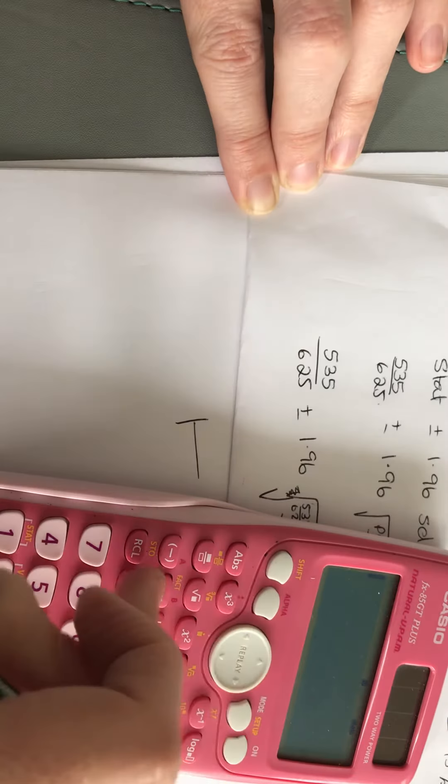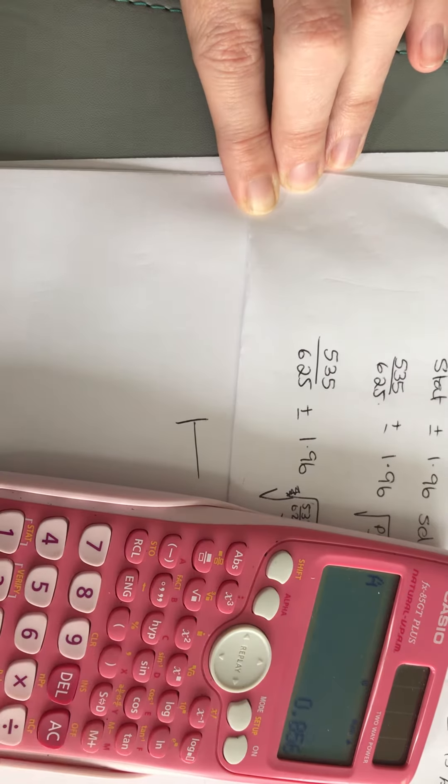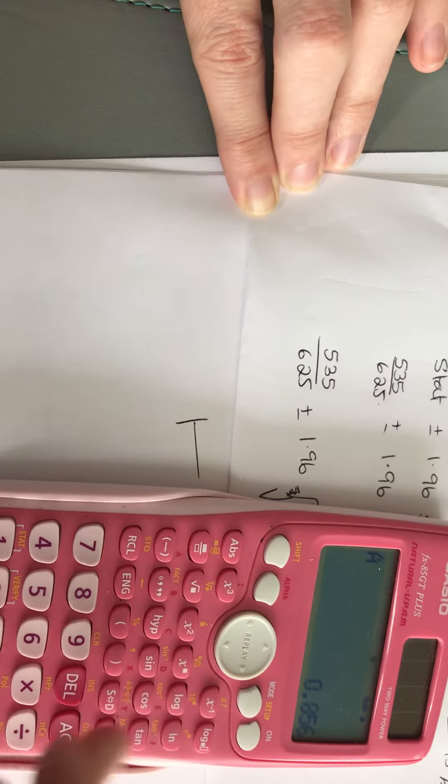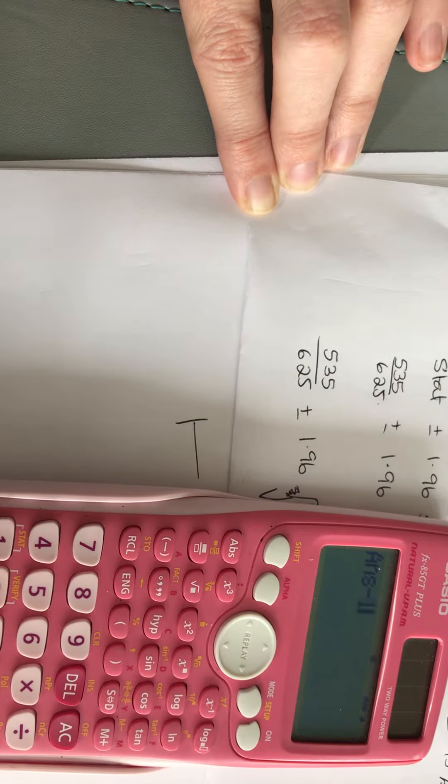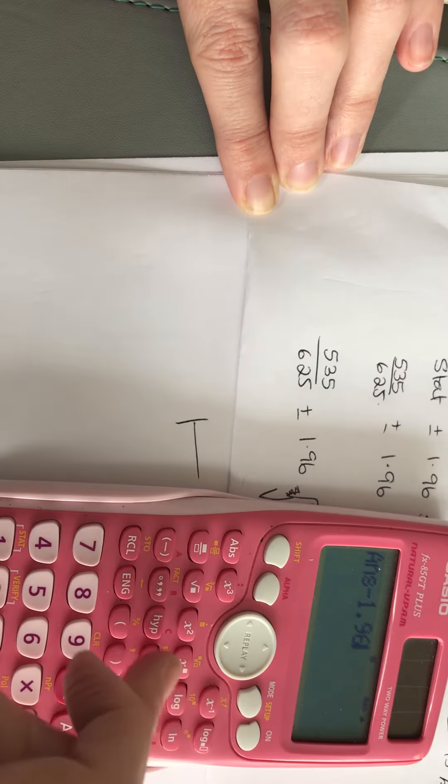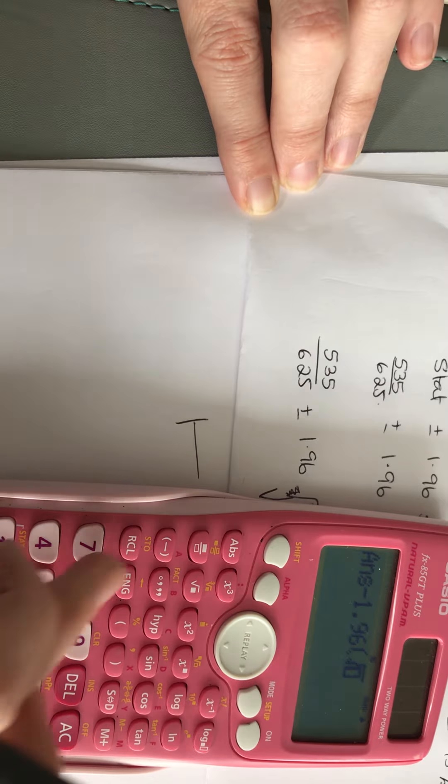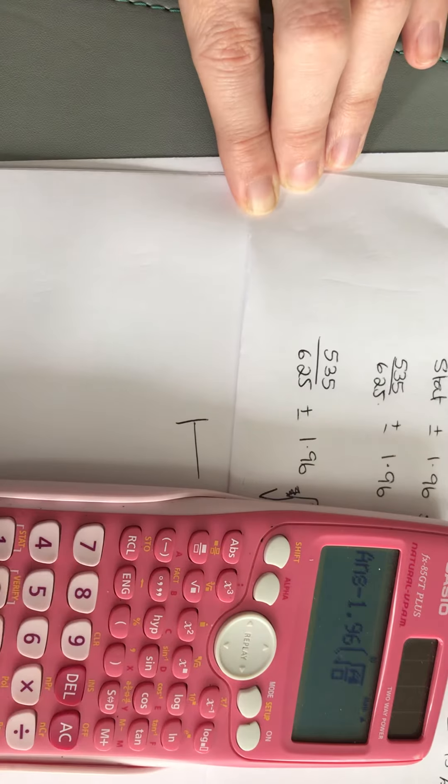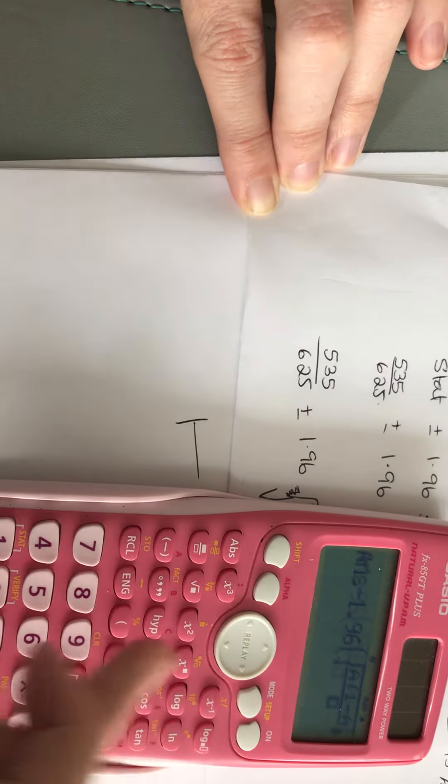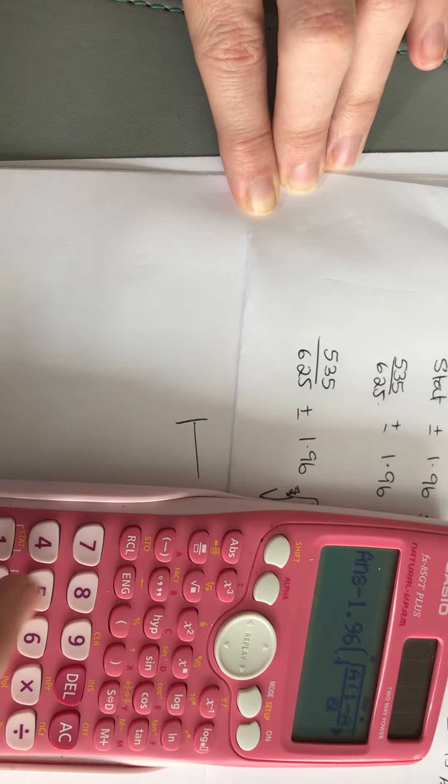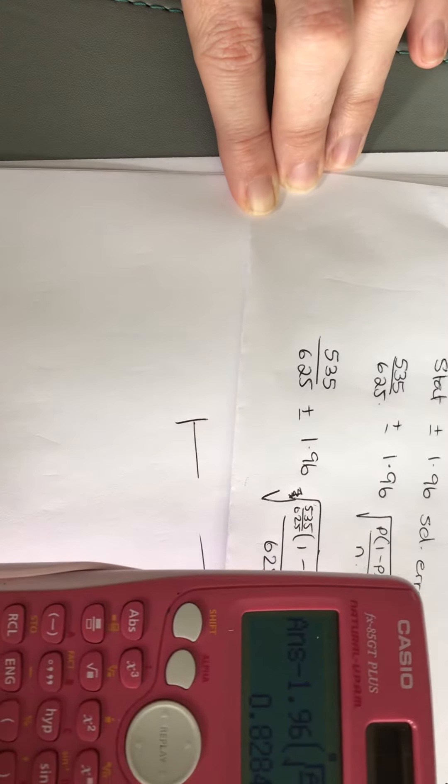So it's my... That minus 1.96 bracket square root of... Okay. There it is. Sorry. 82.85.